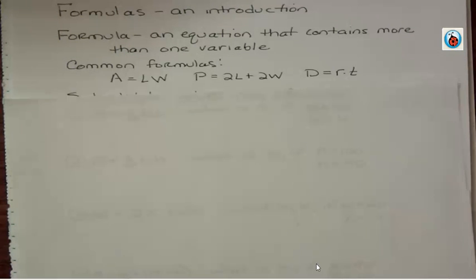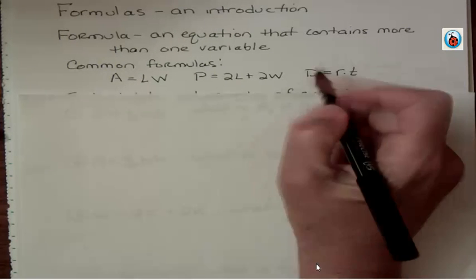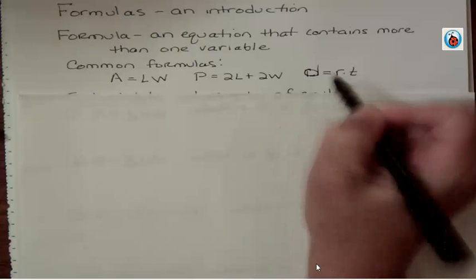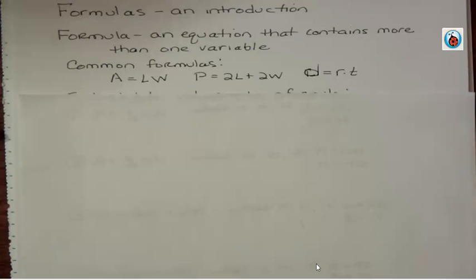Some common formulas you may remember: A = LW, that's the area of a rectangle; P = 2L + 2W, that's the perimeter of a rectangle; and d = rt, which is distance equals rate times time. Actually, in that formula it's usually a lowercase d. And those matter—it's a little annoying to throw capitals and lowercase in there, and I just did it.